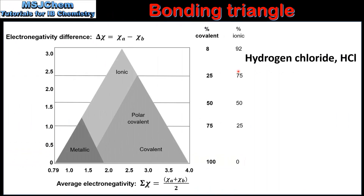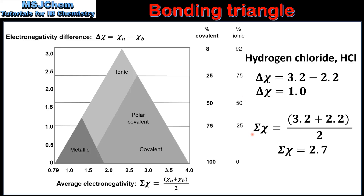The next example is Hydrogen Chloride. The difference in Electronegativity between Hydrogen and Chlorine is 1.0, and the average Electronegativity is 2.7. Plotting 1.0 on the Y axis and 2.7 on the X axis puts us in the Polar Covalent Region of the Triangle. The bond between Hydrogen and Chlorine is a Polar Covalent Bond with 75% Covalent Character and 25% Ionic Character.